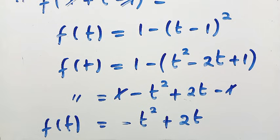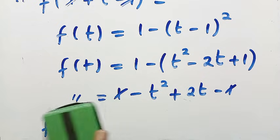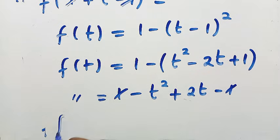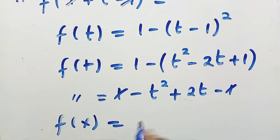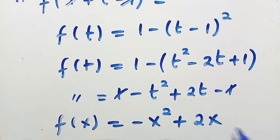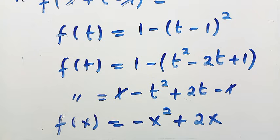Here we have 1 minus t² plus 2t minus 1. Then we have 1 minus 1 cancelled, so we have minus t² plus 2t. F(t) equals this. This is what we got for f(t) when the value is substituted. So let's replace t with x.